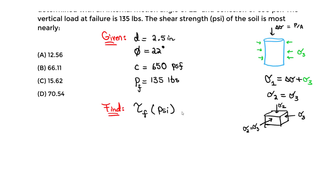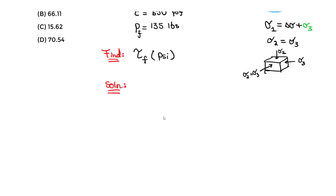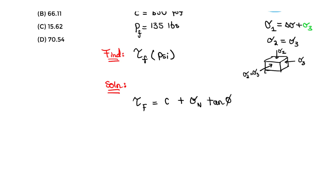For the solution, we use the Mohr-Coulomb failure envelope equation, which is in the handbook. The equation is: tau_f = c + sigma_n * tan(phi), where sigma_n is the normal stress at failure. This equation is based on the Mohr-Coulomb failure envelope, found in the FE handbook.